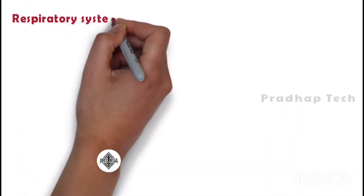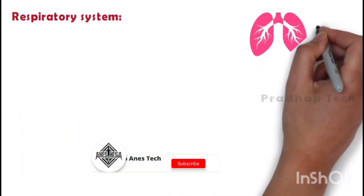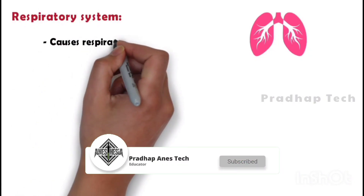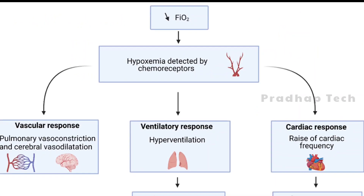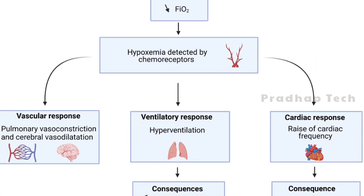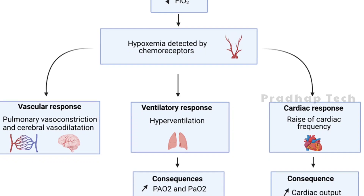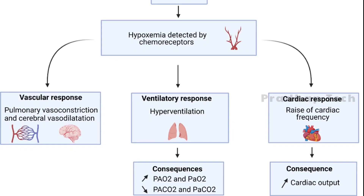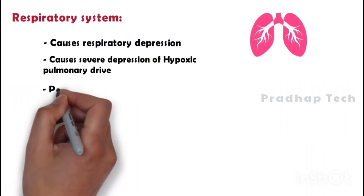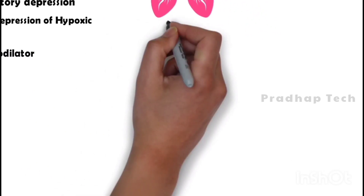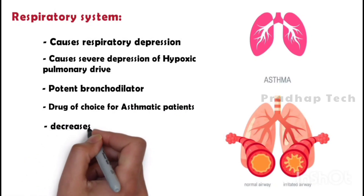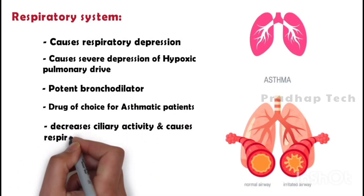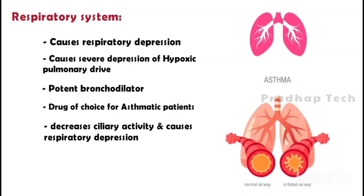Respiratory system: halothane causes respiratory depression and severe depression of the hypoxic pulmonary drive — a form of respiratory drive in which the body uses oxygen chemoreceptors instead of carbon dioxide receptors to regulate the respiratory cycle. It is a potent bronchodilator and is the drug of choice for asthmatic patients. It also decreases ciliary activity.